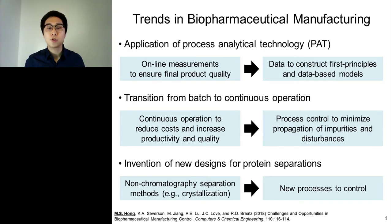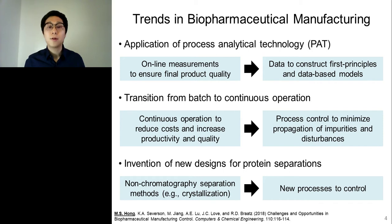There are several trends in biopharmaceutical manufacturing that provide important roles for process systems engineers like myself. First, the growth of biologics has increased interest in applying process analytical technology, PAT. PAT is a system of analyzing manufacturing through online measurements of critical quality attributes to ensure final product quality. Online measurements provide much more data on multivariable interactions and dynamics, and depending on the process understanding, these data have been used to construct first-principles and data-based models for each of the unit operations. Another trend is the transition of many processes from batch to continuous operation.